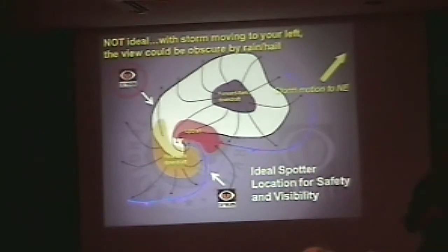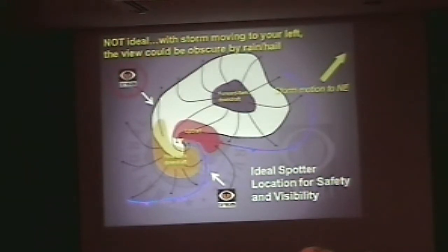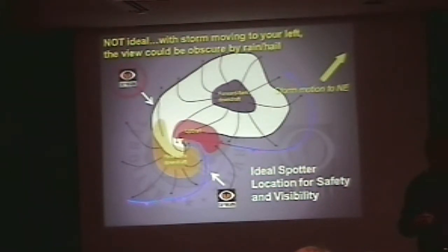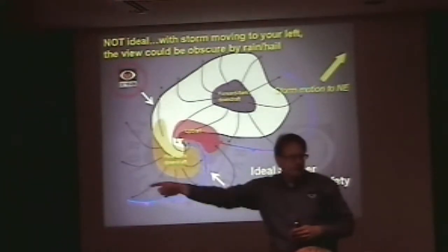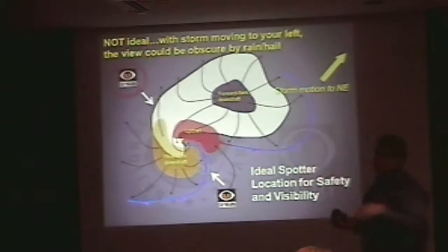Remember that picture with the rear flank downdraft? That brightening in the sky — you always have to be very careful when you see a brightening in the sky like that. I don't mean out where it's blue sky; I mean still in the thunderstorm. This brightening in the sky is very dangerous. Will a tornado drop down over you? Maybe not. Maybe it'll be a half a mile past you. Will a tornado drop down at all? Maybe not.